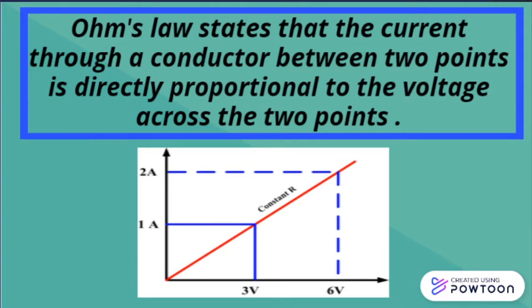Which means that if the voltage increased from, for example, three volts to six volts, also the current will increase from a specific value, let's say one ampere, to another specific value, and this is two ampere.